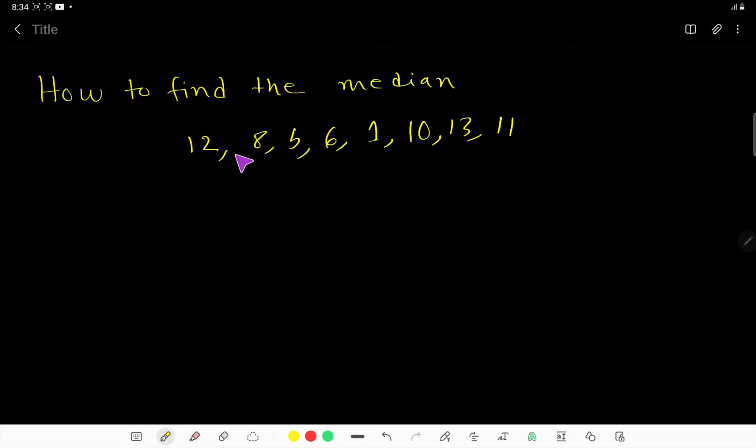How to find the median: 12, 8, 5, 6, 1, 10, 13, and 11. The median means the middle number. Counting the terms, we have 1, 2, 3, 4, 5, 6, 7, 8 - that's 8 terms, which is an even number of observations.